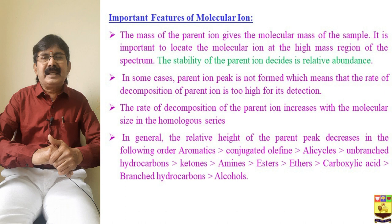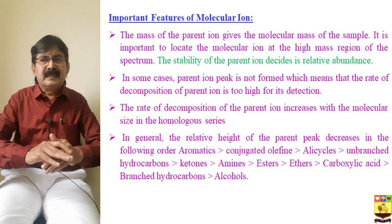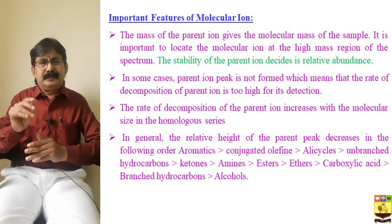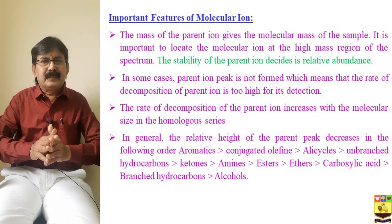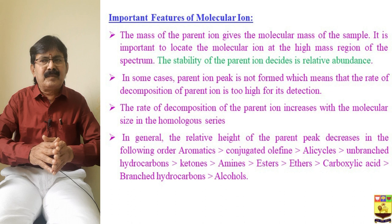The important features of the molecular ion: the mass of the parent ion gives the molecular mass of the sample. It is important to locate the molecular ion at the high mass region of the spectrum. The relative abundance of the molecular ion peak depends on the stability of the parent ion. In some cases the parent ion peak is not formed at all — meaning the rate of decomposition of the parent ion is too high for its detection.